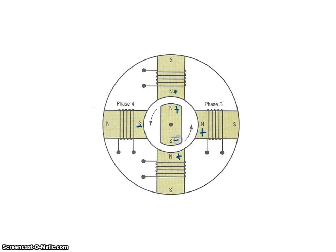So like charges repel and unlike charges attract. So what happens is when this pole is energized in the positive polarity, it's repelling the rotor. Now the rotor can either go clockwise or counterclockwise.